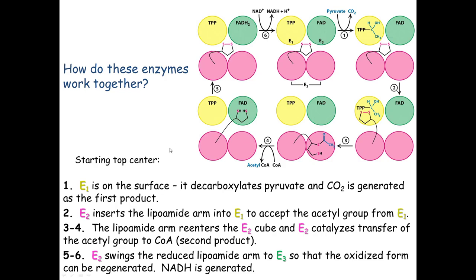The products of this reaction: we started with pyruvate and NAD+ — our end products are acetyl-CoA and NADH. But they're not in the same places. NAD+ was in the cytoplasm; NADH is also in the cytoplasm. Pyruvate was in the cytoplasm; CO2 can diffuse through the membrane easily. And the acetyl-CoA ends up in the matrix — so we accomplished moving it across the membrane at the same time.